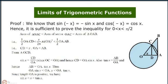From the figure we can clearly understand that area of triangle OAC is less than area of sector OAC is less than area of triangle OAB. Now writing it in mathematical form and cancelling out the common terms we get the relation CD is less than x into OA is less than AB.